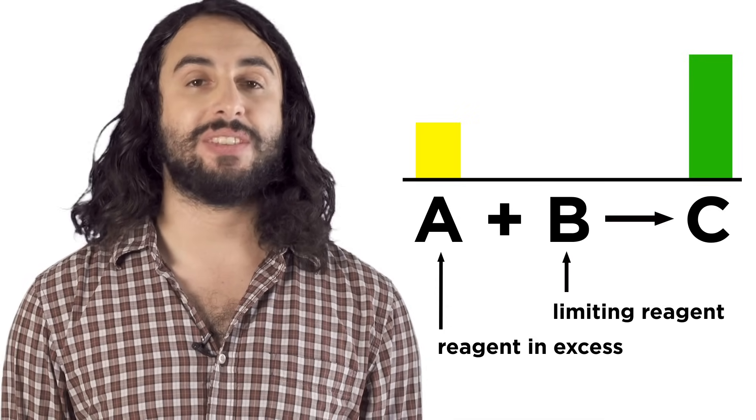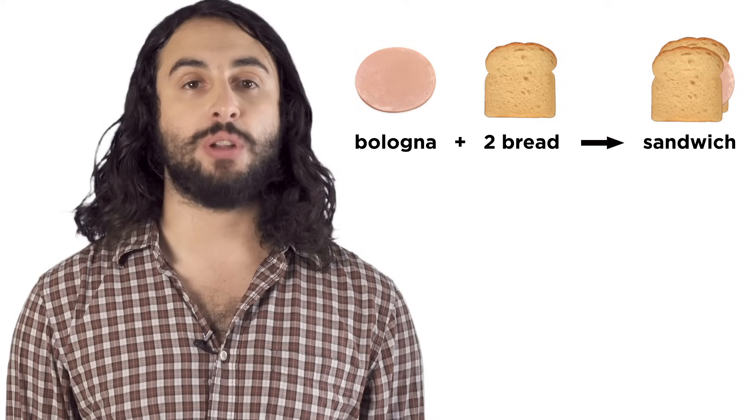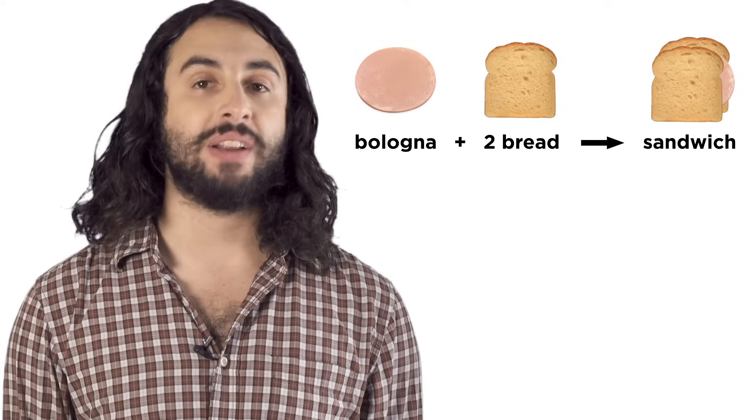In order to tell which is the limiting reagent, we have to see which quantity will limit the reaction stoichiometrically, and it won't automatically be the substance that is present in the lesser amount. For example, if we are making bologna sandwiches, we might use the following equation. The balanced equation shows that we need one bologna and two bread to make one sandwich.